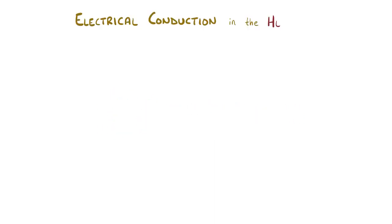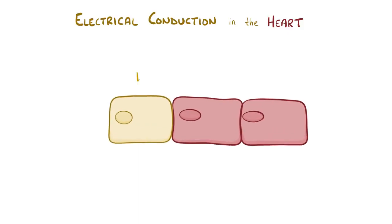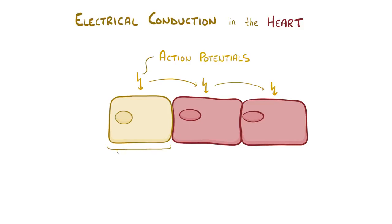Electrical conduction in the heart refers to the electrical signals that go from cell to cell in the heart. This happens in the form of action potentials, which get sent out by the pacemaker cells. The pacemaker cells, also called conducting cells, are a relatively tiny group — only about 1% of the heart cells — but they're a pretty influential minority.